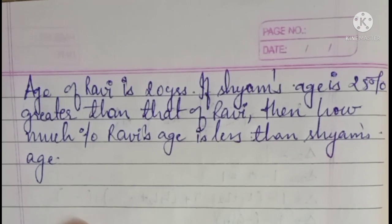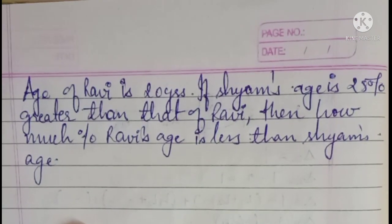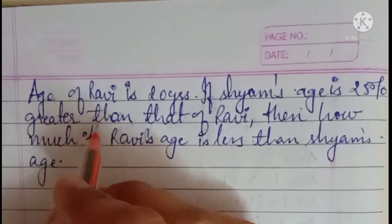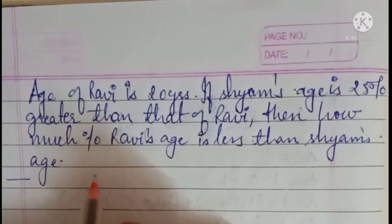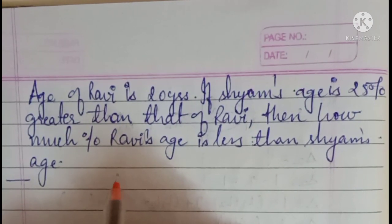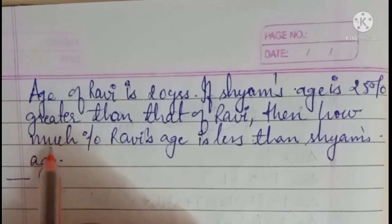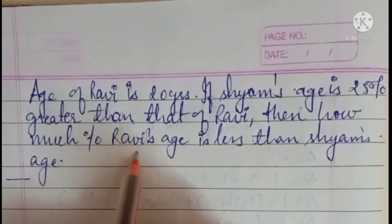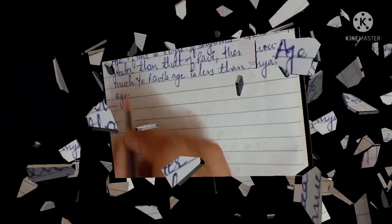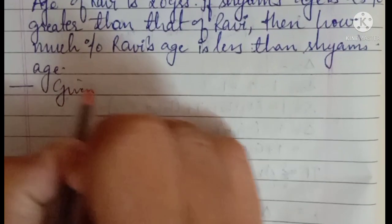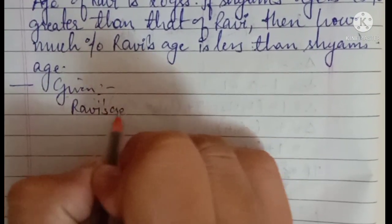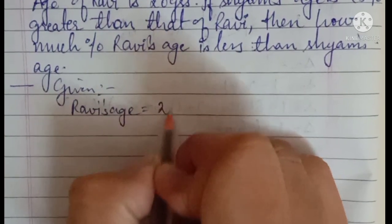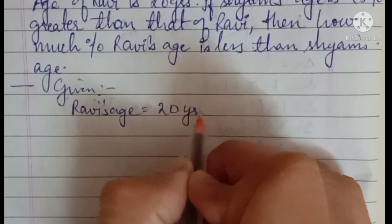Let's see the problem: the age of Ravi is 20 years. If Shyam's age is 25% greater than Ravi's, then how much percentage is Ravi's age less than Shyam's? So the given information is: Ravi's age is 20 years.